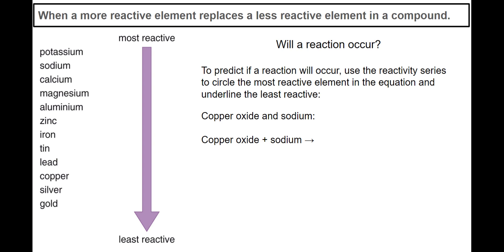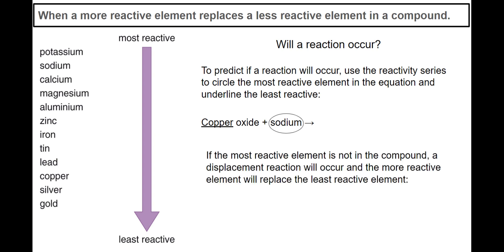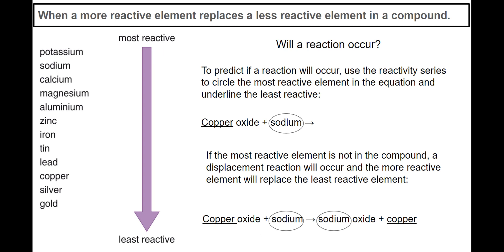If we take this as an example — copper oxide and sodium. Copper oxide is a compound; sodium is just in the form of sodium metal. We are going to underline copper, because copper is furthest towards the bottom of the reactivity series compared to sodium, which is really high at the top. We underline copper because that is the least reactive of the two, and we circle sodium as the most reactive. The most reactive element isn't in the compound — sodium is just by itself — so a displacement reaction will occur, and the more reactive element will replace the least reactive element in the compound. So: copper oxide plus sodium gives us sodium oxide plus copper. Sodium has replaced copper in the oxide.